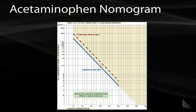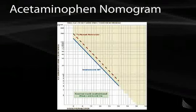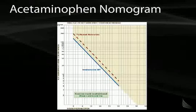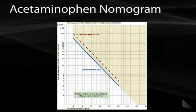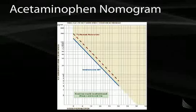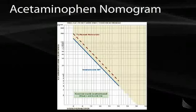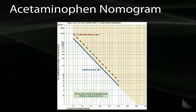This is an acetaminophen nomogram. On the x-axis is time in hours post-ingestion, and on the y-axis is acetaminophen plasma concentration. You ask the patient how long ago they took the Tylenol — for example, four hours ago. If their plasma concentration falls below the treatment line, do not treat. If their plasma level is above the solid line, treat with mucomist or N-acetylcysteine. For example, at four hours, a blood level of 300 requires treatment, while a level of 30 does not.